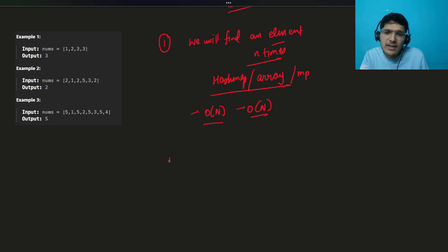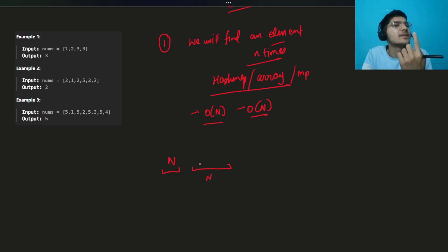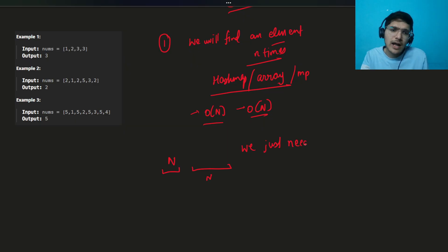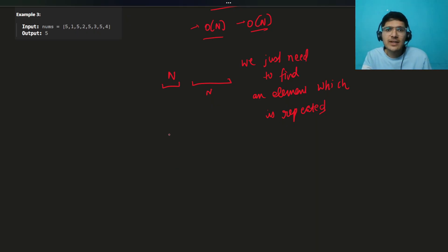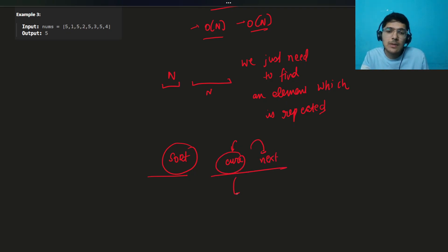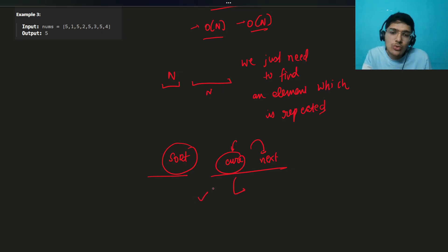Let's understand this again. One element repeats n times and the remaining n elements are each unique — every other element occurs only once. So we just need to find the duplicate element. Another approach: sort the array. It's very simple — just compare the current element with the next element. If they are equal, return the current element. Time complexity is O(n log n) and space complexity is O(1).